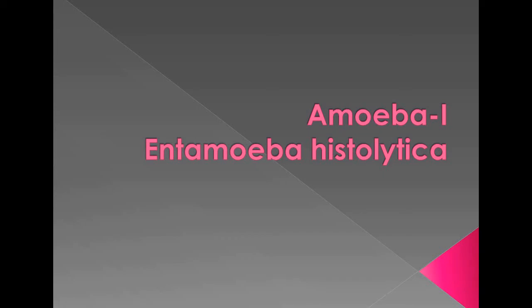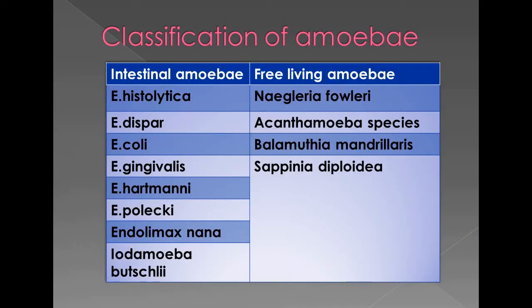Welcome to Ultra Health Tutorial. Today we discuss amoeba, especially Entamoeba histolytica. Amoeba are classified on the basis of intestinal amoeba and free-living amoeba. In intestinal amoeba, the most common is Entamoeba histolytica, which is pathogenic. Others include E. coli, E. hartmanni, E. polecki — these are non-pathogenic — and Endolimax nana, I. buetschlii.